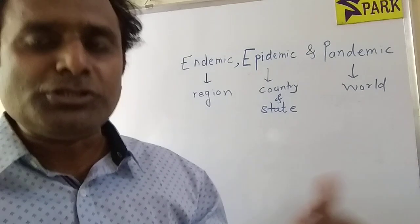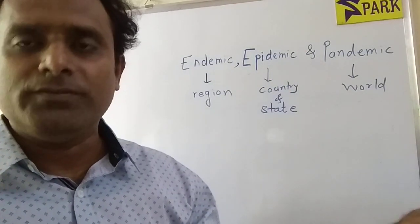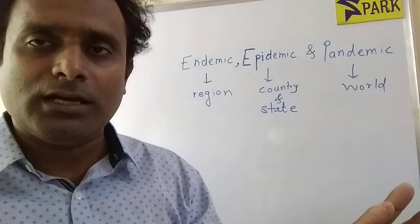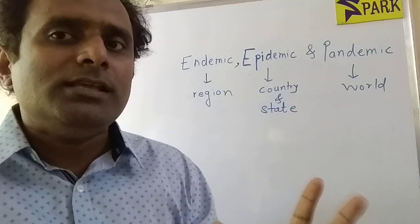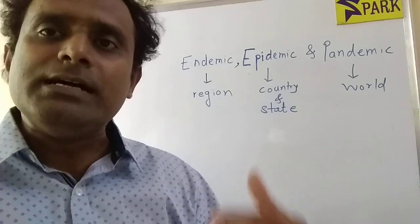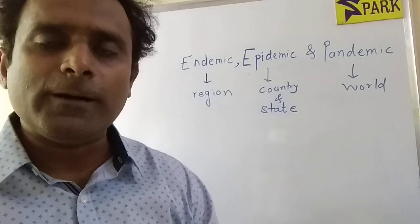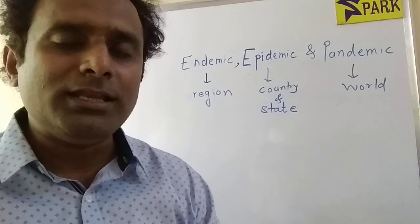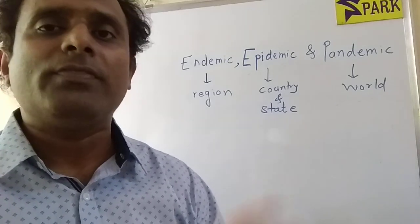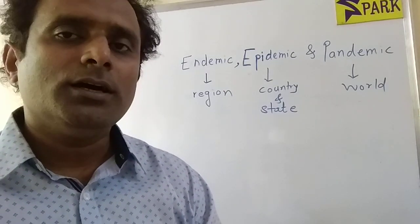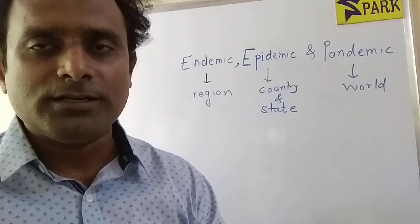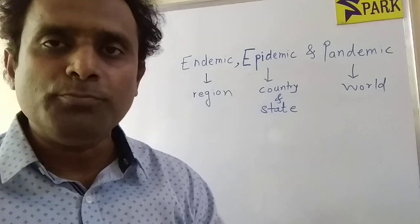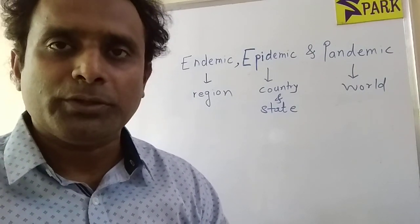Discrimination against women is endemic in our country, meaning it is a social problem commonly seen in our society that cannot be easily solved or dealt with. I hope you have understood these words, their different usages and meanings, and the different contexts in which they are used figuratively. You can see the example sentences in the description of this video. Thank you.